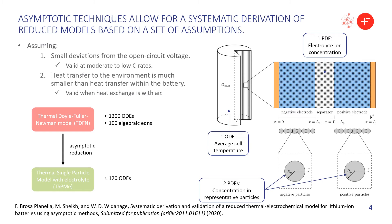Originally we had the thermal DFN model — even with a lumped thermal model — that is about 1200 ODEs plus 100 algebraic equations. Using the same resolution, after the asymptotic reduction, we can use the TSPME model, which is about 120 ODEs. So there's a factor of 10 in the ODEs. But more importantly, we don't have any algebraic equations, which is what makes the DAE system complicated — the combination of ODEs and algebraic equations.